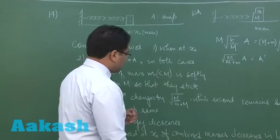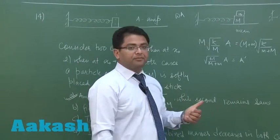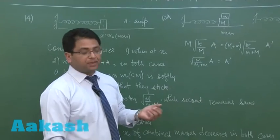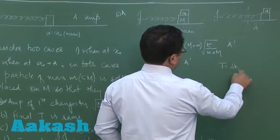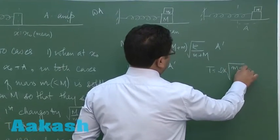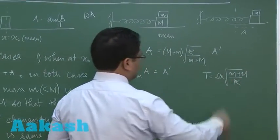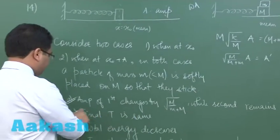Let us try to see the final time period is same. And that is true. You know time period is independent of amplitude. Straight away we can write T is 2π root m by k. But the new mass of both would be m plus m. So the final time period is same.